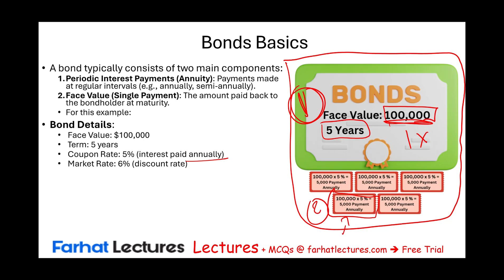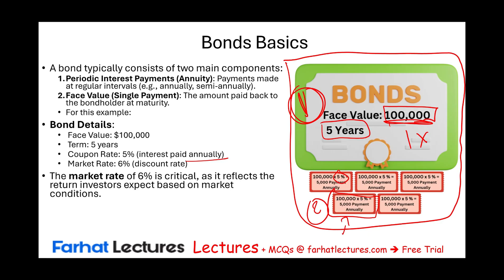Now we introduce the concept of a market rate. The market rate is totally different — it's the interest rate you will use as an investor to discount; it's the discount rate. In this example, the market rate is 6%, which is more than the coupon rate. The investors want to earn more than what the company is offering. Because the company offers 5% but the market rate is 6%, this reflects the return investors expect based on market conditions.